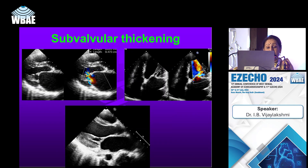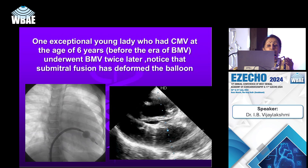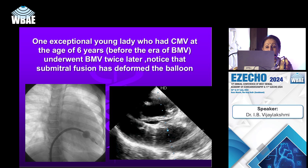Pressure half time is very important. Hatle's method calculates the functional orifice area and is useful because it provides information on both valvular and subvalvular disease. In the Indian subcontinent, subvalvular fusion is very important to assess for any intervention. When MS is associated with atrial fibrillation, we have to be particularly careful.